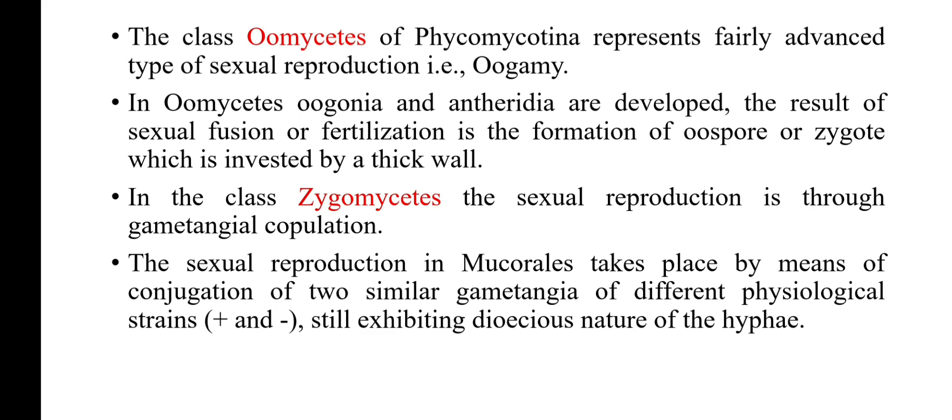In class Oomycetes of Phycomycotina, the group represents a fairly advanced type of sexual reproduction, that is oogamy, where the female sex organ is non-motile and large, and male sex organs are smaller and motile. In Oomycetes, oogonia and antheridia are developed, and the result of their fusion or fertilization is the formation of a zygote or oospore. In class Oomycetes, sexual reproduction is through gametangial copulation.